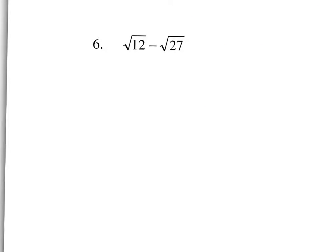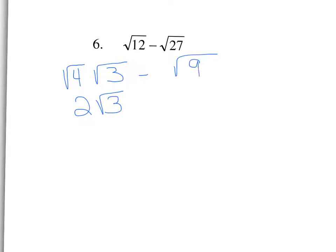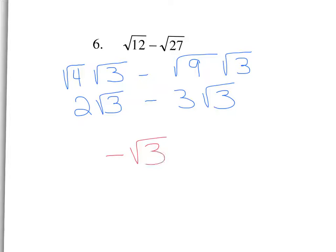On number six it looks like these are not like radicals — this is the square root of 12 and the square root of 27. However they both need to be simplified. The 12 has a perfect factor of 4, so this simplifies to 2 square root of 3. The 27 has a perfect factor of 9, so this simplifies to 3 square root of 3. They are like radicals because they both have square root of 3, so 2 minus 3 makes negative 1 square root of 3.